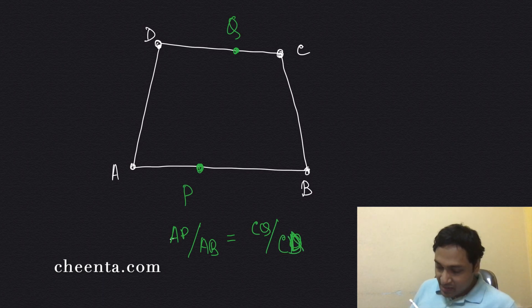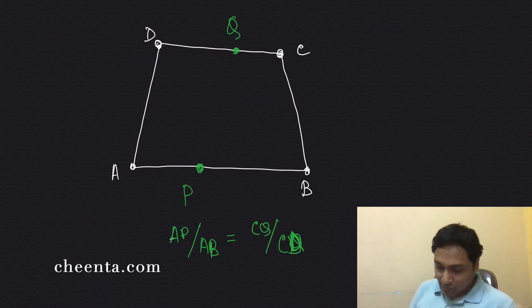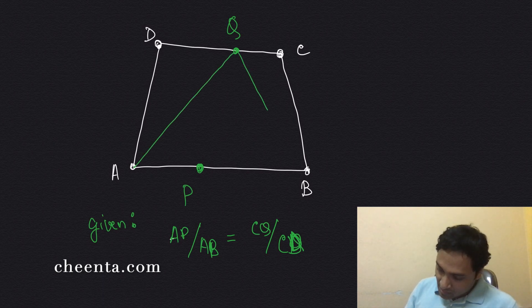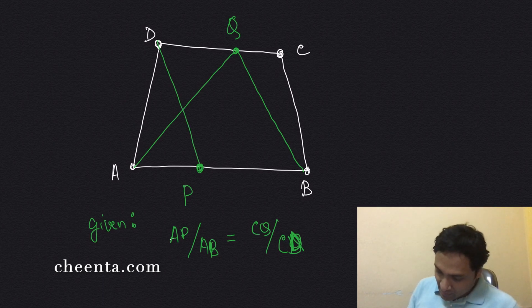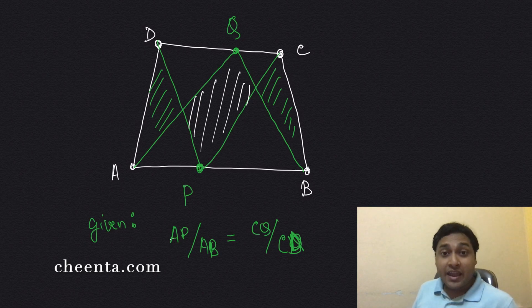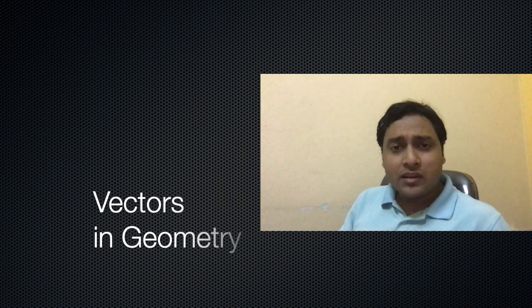So AP/AB = CQ/CD is given. Now we want to show that if we join AQB and CPD, these two green regions add up in area to equal the white part of the quadrilateral.